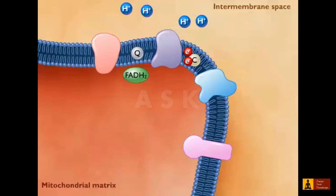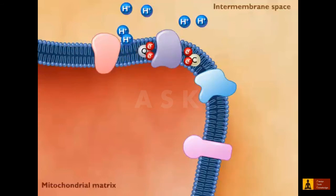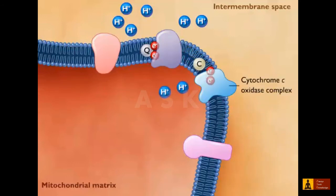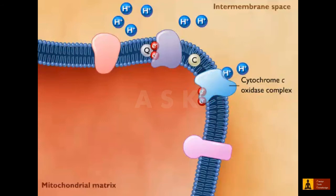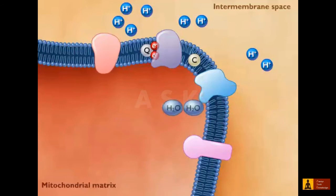Electrons are also transferred from FADH2 to coenzyme Q, with the protons being transferred across the membrane. Cytochrome C transfers electrons to the cytochrome C oxidase complex. Protons are also transferred to the outside of the membrane by the cytochrome C oxidase complex. The cytochrome oxidase complex then transfers electrons from cytochrome C to oxygen, the terminal electron acceptor, and water is formed as the product.